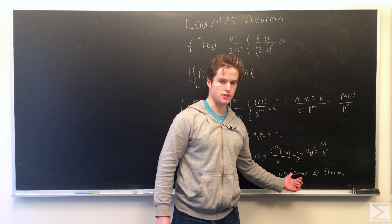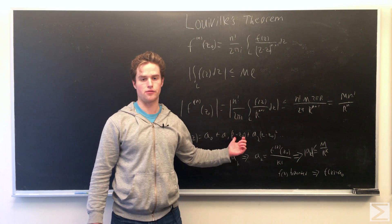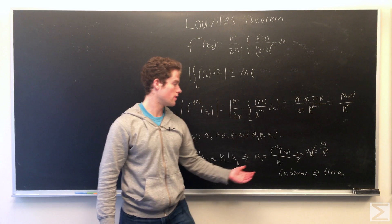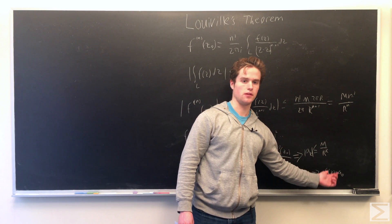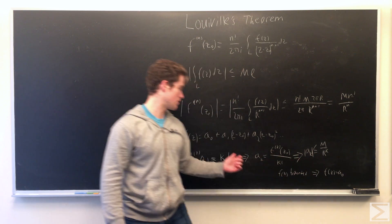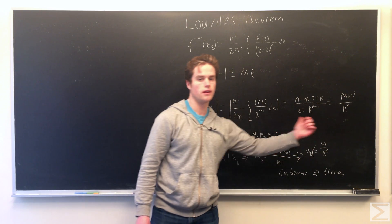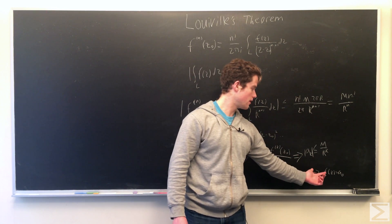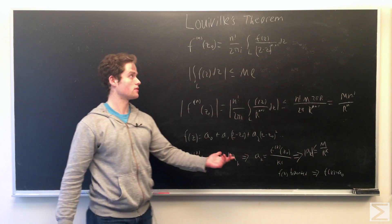So if f(z) is bounded, if the power series is valid for arbitrarily large r, we conclude f(z) must be a constant function. Since none of the moduli of any of these a₁, a₂, can be greater than 0, so they must be 0. And so we have Liouville's theorem.